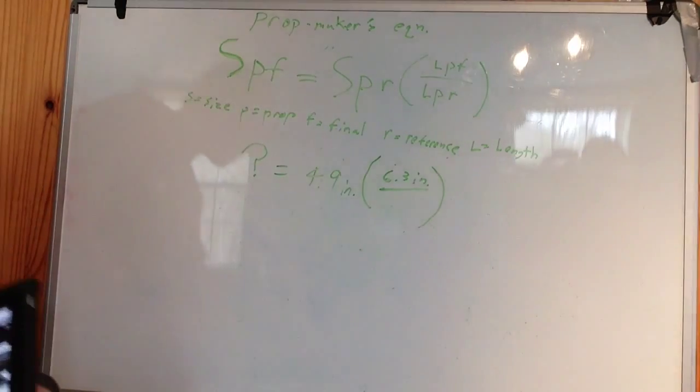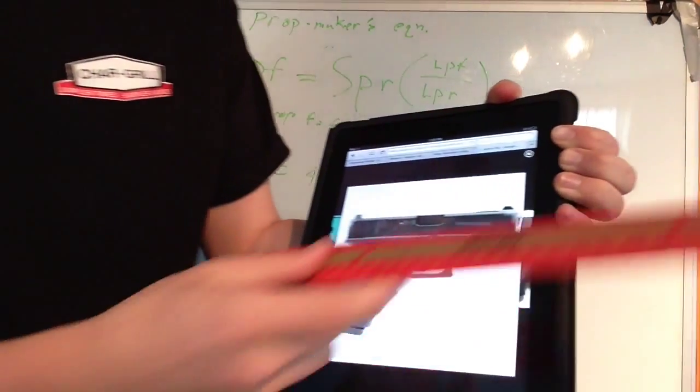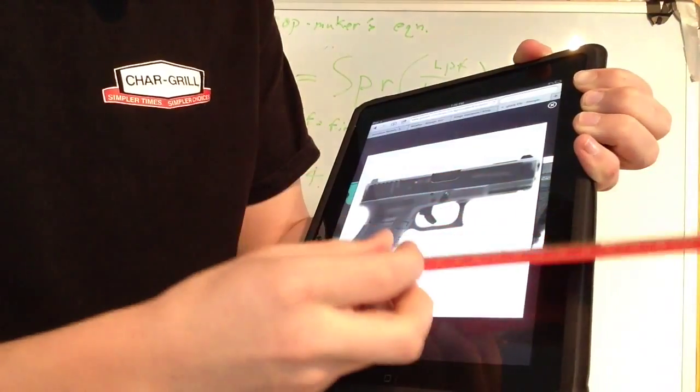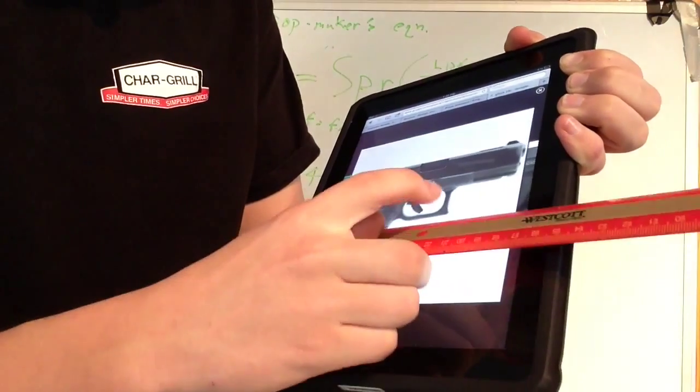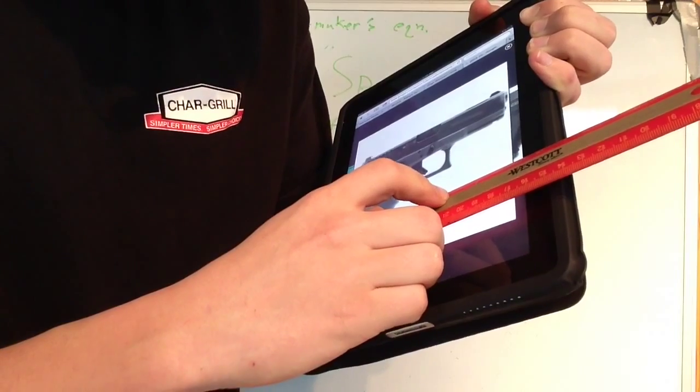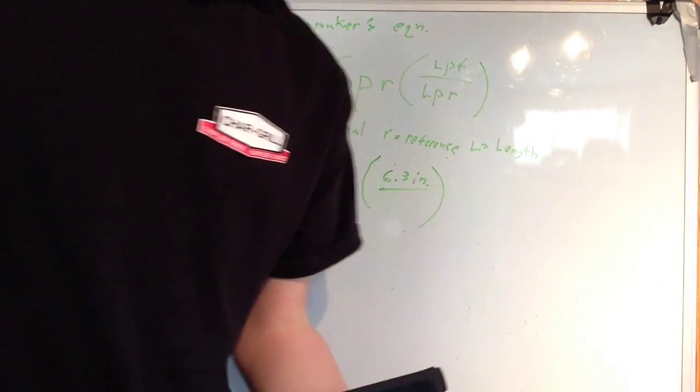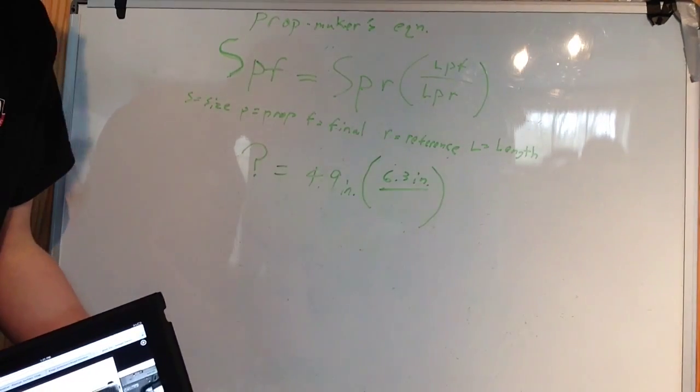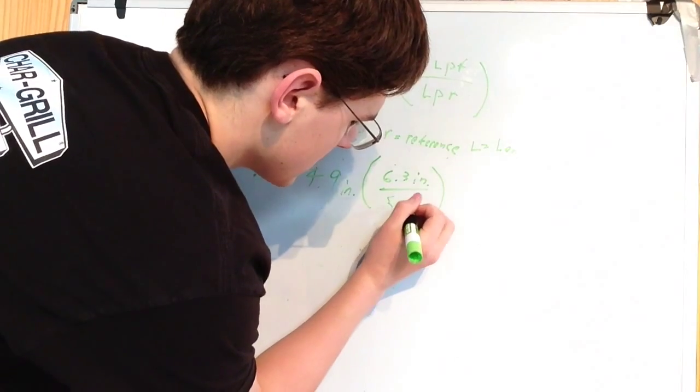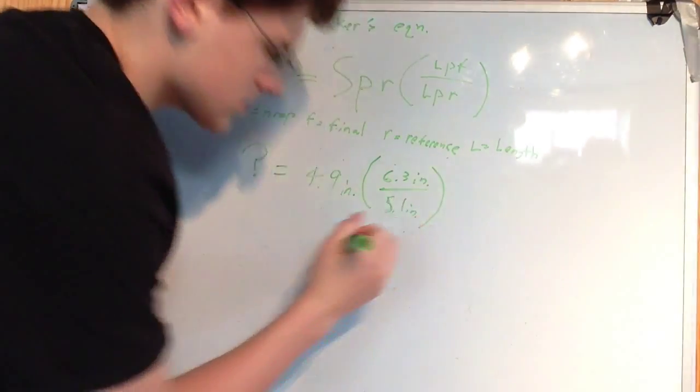Divided by what? How long is the prop in the reference? Well, again, I've got my iPad here. Measure the length of the prop, and that's from the butt of the grip to the front of the barrel. And it's about 5.10 or 5.1 inches long. So, 5.1 inches.